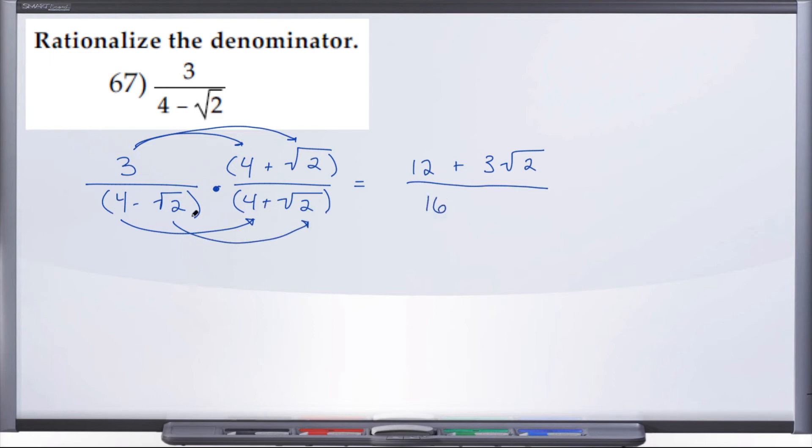And so we have 12 plus 3 radical 2 over 16 minus 2, right? Radical 4 can come out free and clear as a 2. So we end up with 12 plus 3 radical 2 over 16 minus 2 is 14. And there we have the final answer for number 67: 12 plus 3 radical 2 over 14.